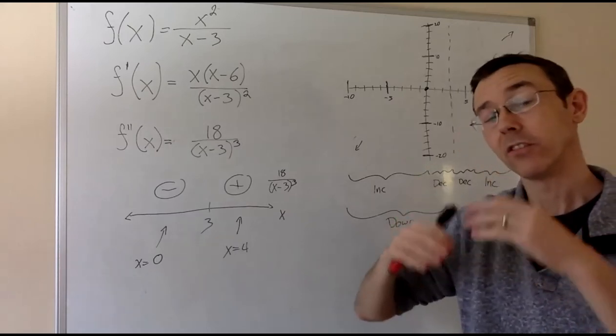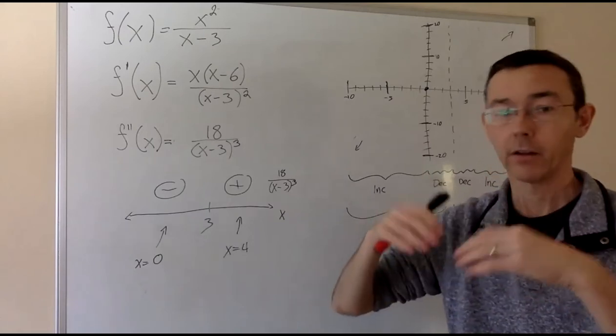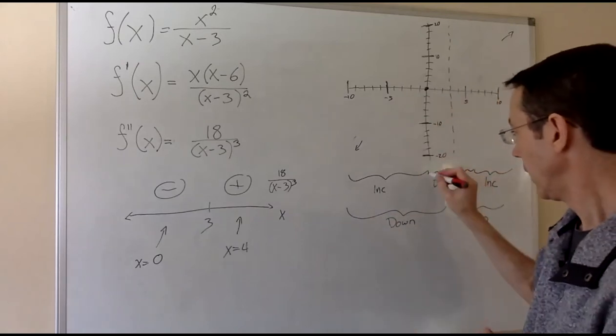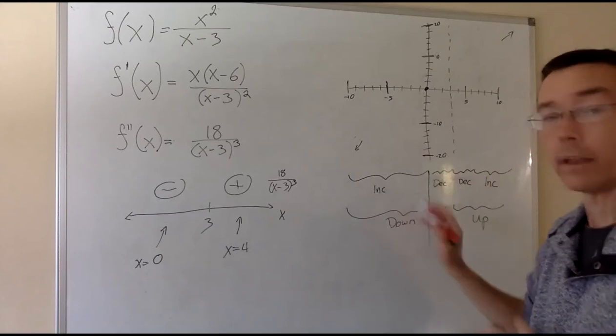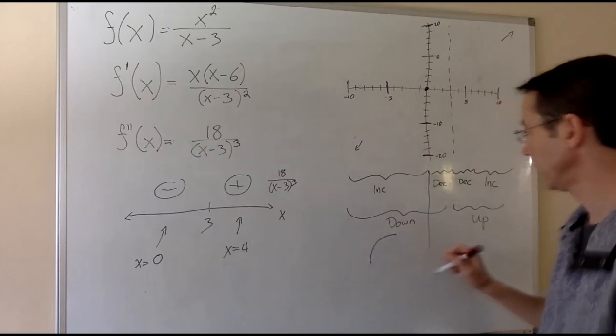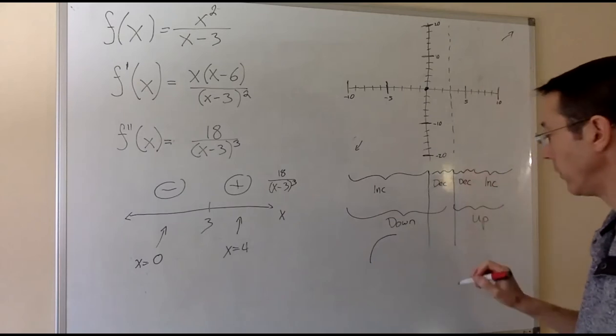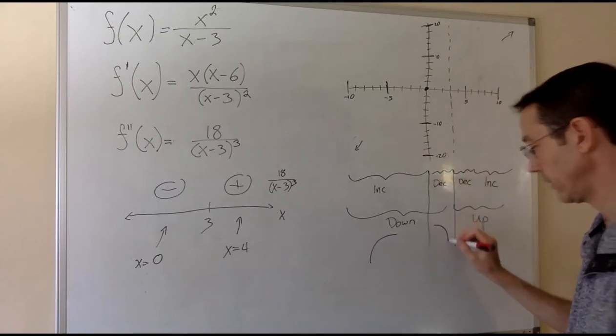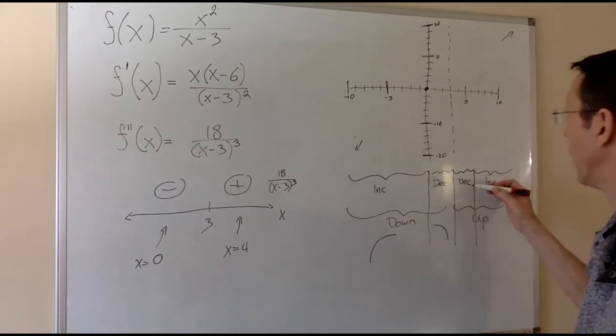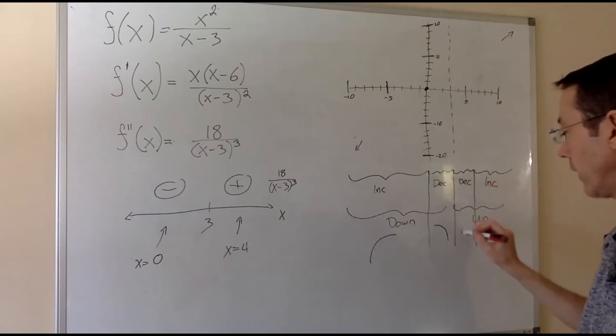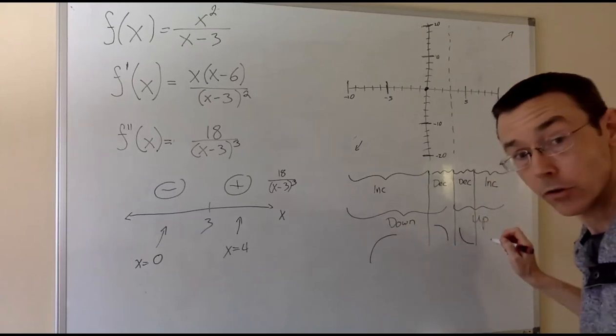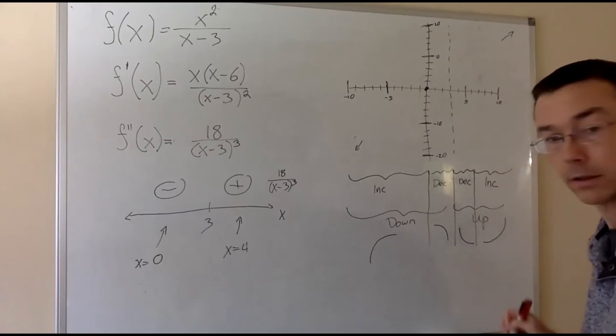Now we're going to go through and look at the combinations of increasing and decreasing, concave up, concave down, which will give us a general feel for what the graph has to look like on those intervals. So first of all, when x is less than 0, increasing, concave down. That's going to look like this. Next, from 0 to 3, decreasing, concave down, like that. Next, from 3 to 6, it's going to be decreasing, concave up, like that. And then finally, increasing and concave up, like that.